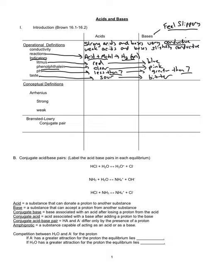Bases tend to be bitter to the taste. Now for definitions — the first definition you need to know is the Arrhenius definition for acids and bases. Arrhenius says that an acid is a substance that produces H⁺ hydrogen ions in solution.